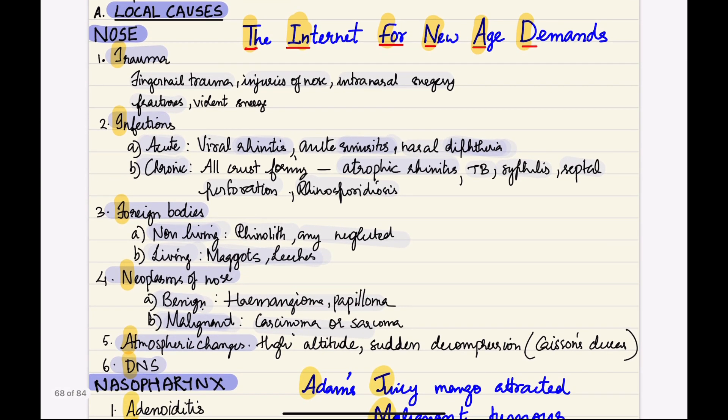Under nose-related causes we can learn through a mnemonic: 'The Internet for New Age Demands'. T stands for trauma - any trauma in the nose such as fingernail trauma, injuries of the nose, intranasal surgery, violent sneeze, or fractures. I stands for infections which can be acute or chronic.